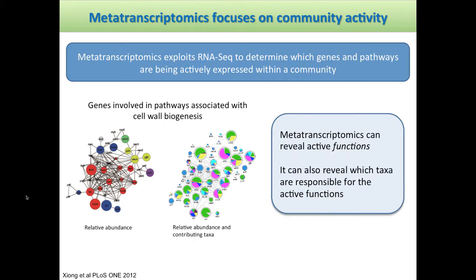So how do we go about doing this? The whole idea of metatranscriptomics is that we're exploiting RNA-seq technology to determine which genes and which pathways are actually being actively expressed within the community. For example, we might have a set of genes involved in cell wall biogenesis. Using metatranscriptomics, these nodes in the graph each represent a gene, and the size of the nodes represents the relative expression of those genes, so you can see which genes are actually active. By layering on taxonomic information, you can identify which taxonomic groups are responsible for those particular activities.